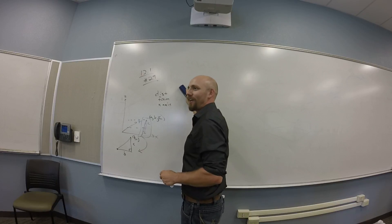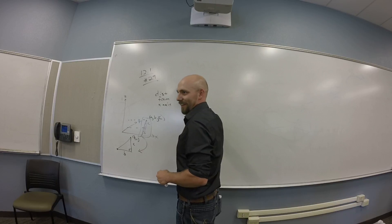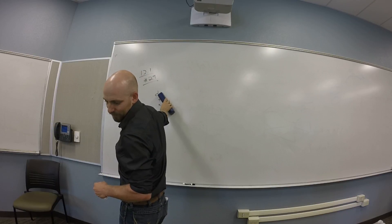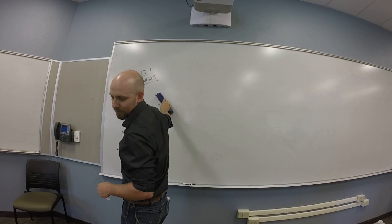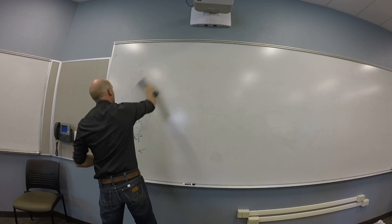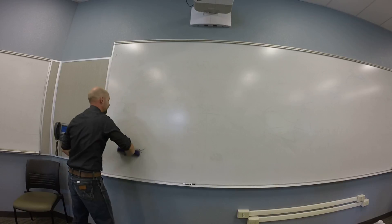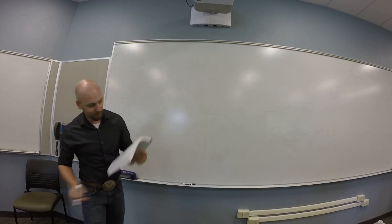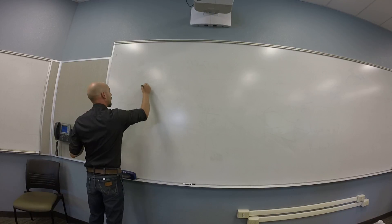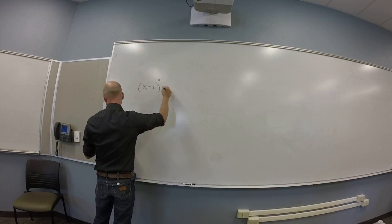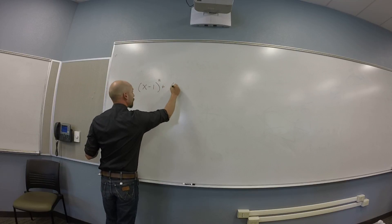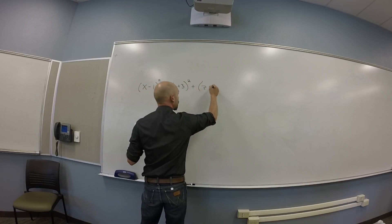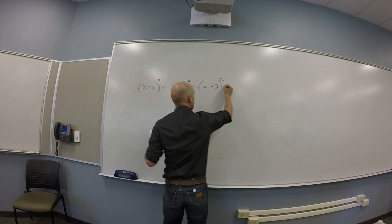Find the equations of the circles, if any, where the sphere x minus 1 squared plus y plus 3 squared plus z minus 2 squared equals 4 intersects each coordinate plane.